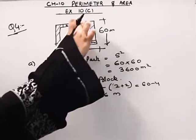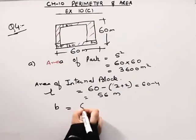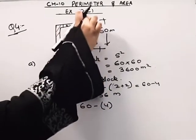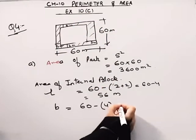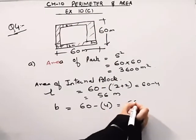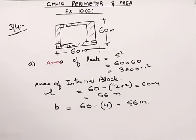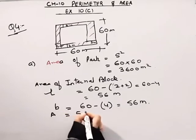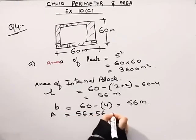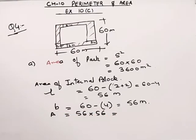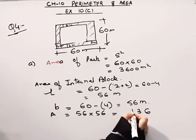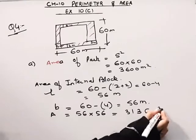What will the breadth be? Breadth will again be 60 minus 4 — 2 meters this side and 2 meters this side — so this will come out to be 56 meters. Now what we will do here is find the area, which will be 56 into 56. This will come out to be 3136 meter square.